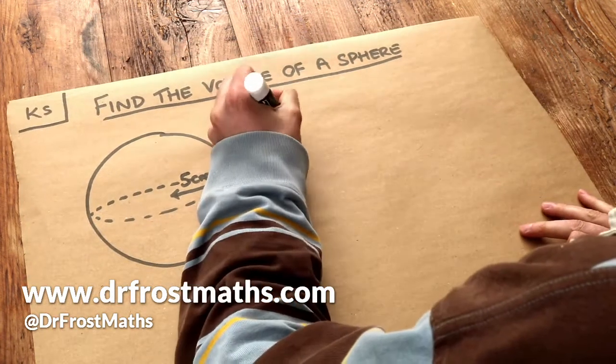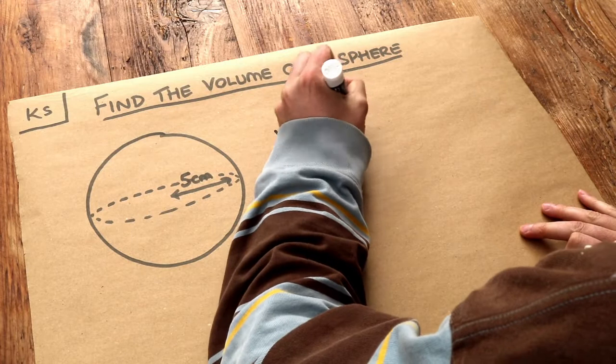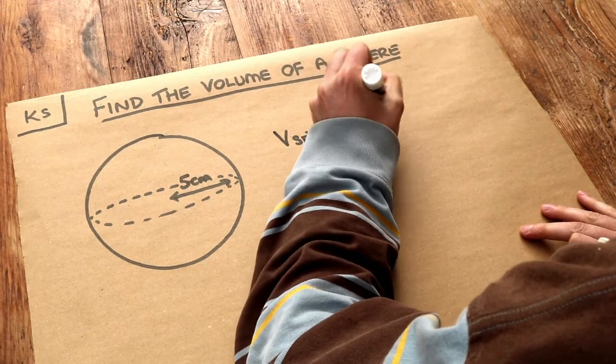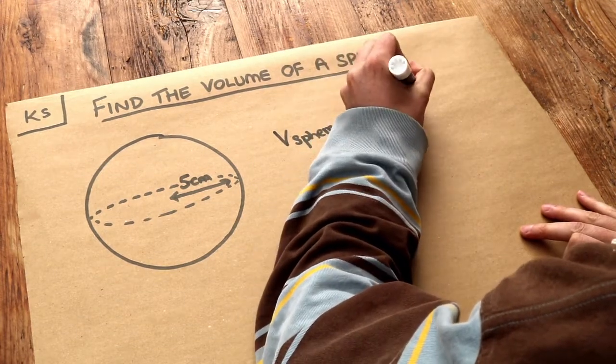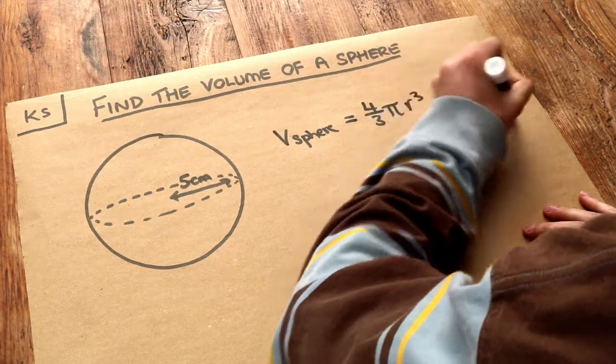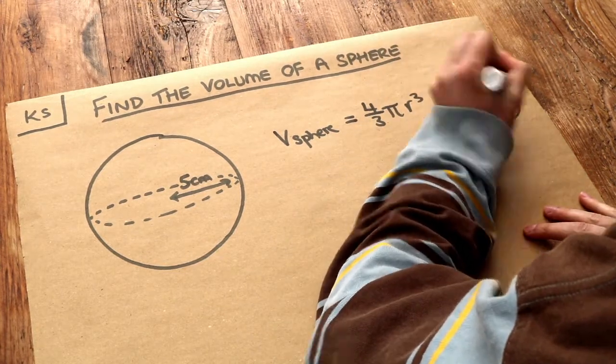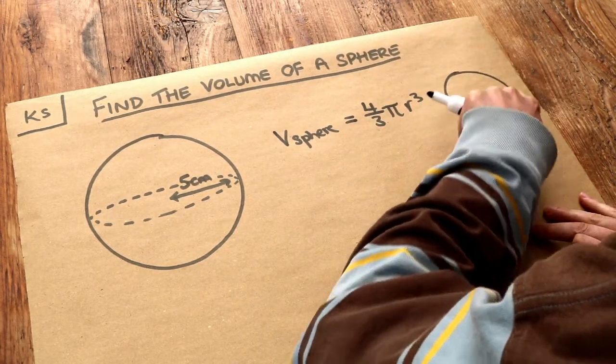Now the volume of a sphere has this formula: it is 4 thirds times pi times the radius cubed, where the radius is just the distance from the center of the sphere to the surface of the sphere.